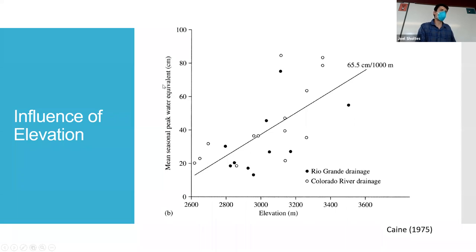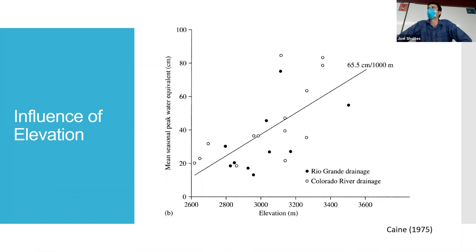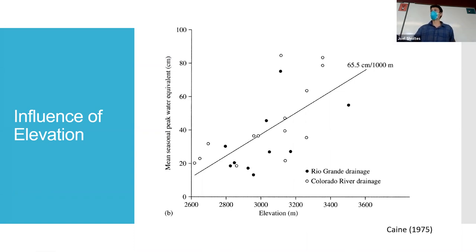This is mean seasonal snowpack — snow water equivalent in centimeters versus elevation — and there's a pretty linear relationship. For every thousand meters of elevation, you get about 65 centimeters, a little over half a meter of precipitation. This is really important because the Grand Valley's drinking water supply comes from the Grand Mesa, which sits at around 3,000 to 3,500 meters. It's really flat.